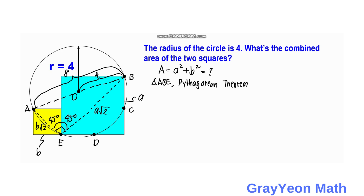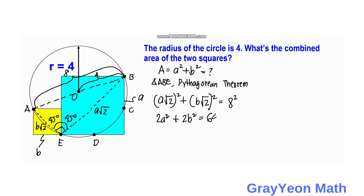We focus on triangle ABE and apply the Pythagorean theorem. One leg is A root 2, the other is B root 2, and the hypotenuse is 8. So we have (A root 2) squared plus (B root 2) squared equals 8 squared, which gives us 2A squared plus 2B squared equals 64. We factor out 2 on the left-hand side.